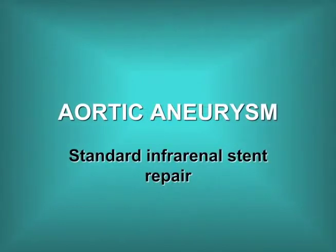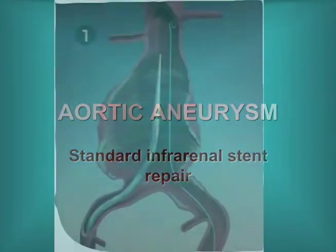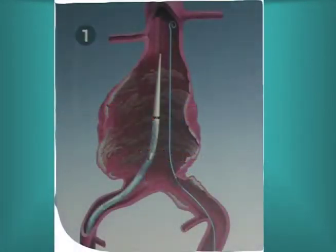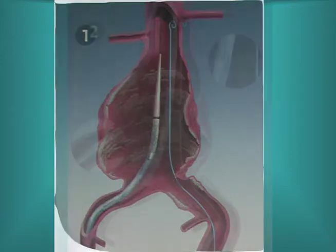Aortic aneurysms — standard infrarenal stent repair. Aneurysms are repaired with stent grafts under x-ray control. Guide wires are placed from both common femoral arteries up across the aortic aneurysm into the descending thoracic aorta.